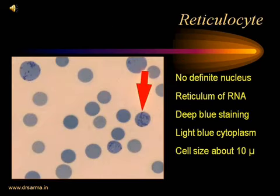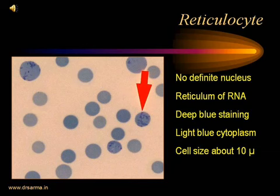Reticulocytes have no definite nucleus unlike early or intermediate normoblasts, but they have remnants of nuclear material — the reticulum of RNA — which stains deep blue against the light blue cytoplasm. The cell size of a reticulocyte is around 10 microns compared to the 7-micron size of a mature RBC.